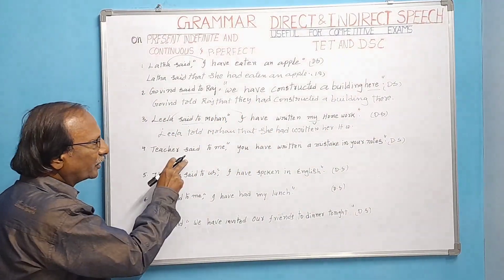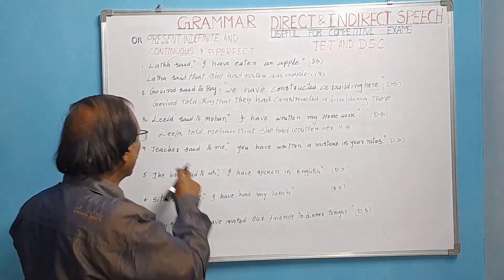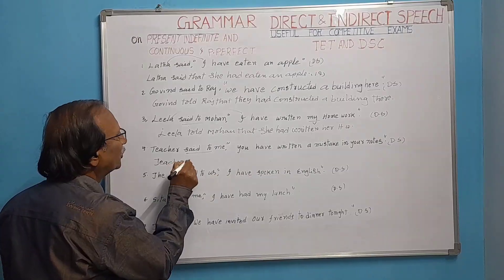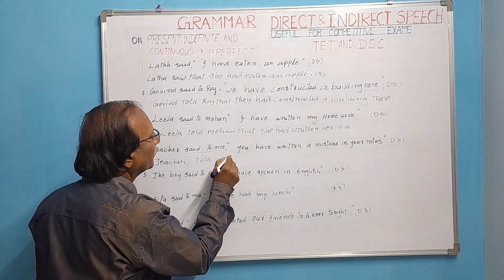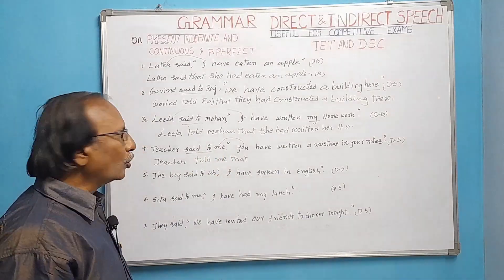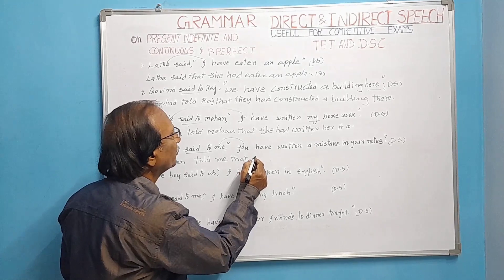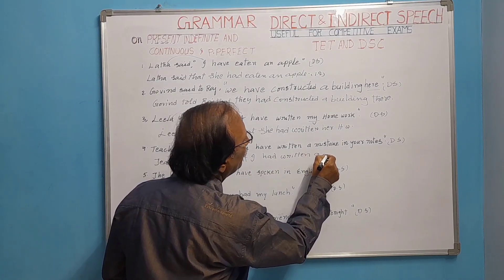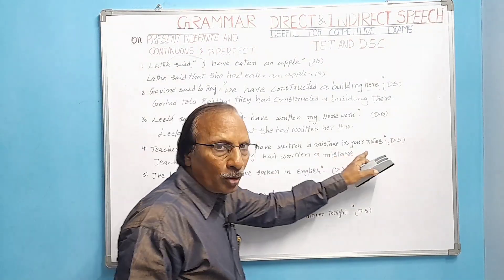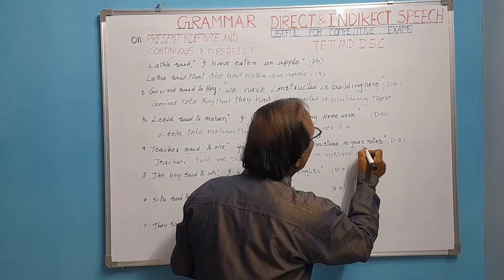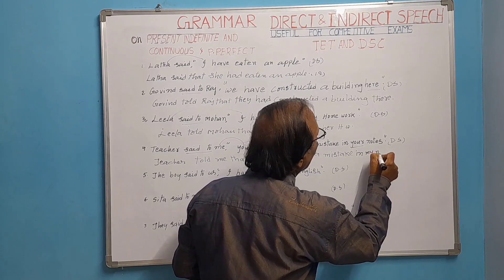The teacher said to me, 'You have written a mistake in your notes.' 'Said to' becomes 'told': the teacher told me. We add 'that.' 'You' refers to me, so the subject becomes 'I.' 'Have written' changes to 'had written.' 'Your notes' refers to my notes. Result: The teacher told me that I had written a mistake in my notes.